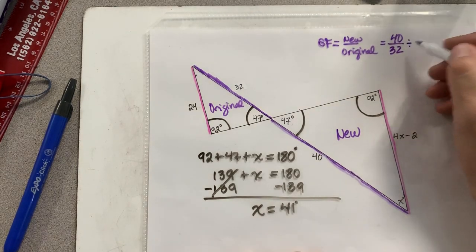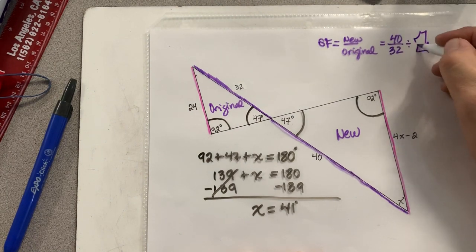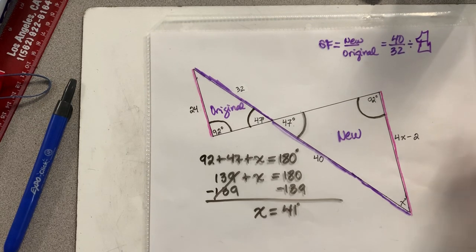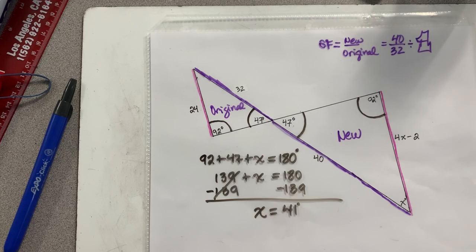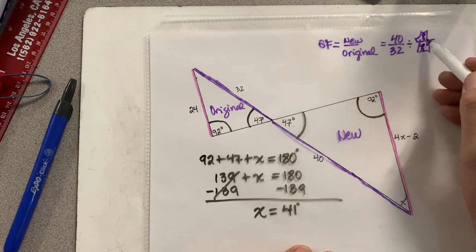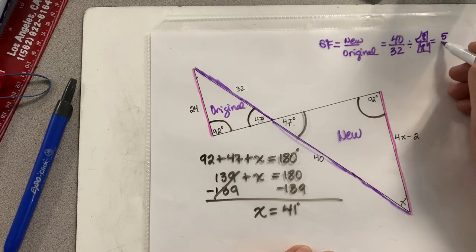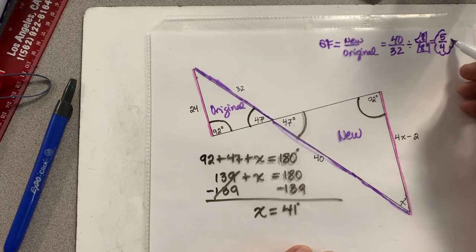Now I'm going to divide 40/32 by a giant 1. Amari, do you have my giant 1? Amari does not have our giant 1. Brian? That's not a giant 1. 8/8ths. 40 divided by 8? 5. 32 divided by 8? 4. So our scale factor is 5/4ths.